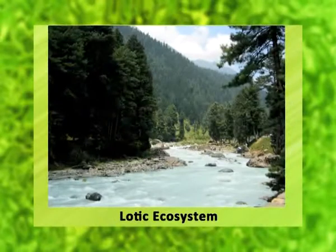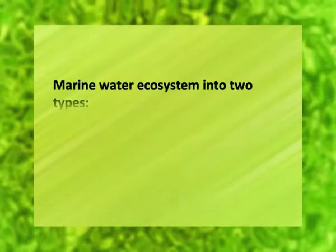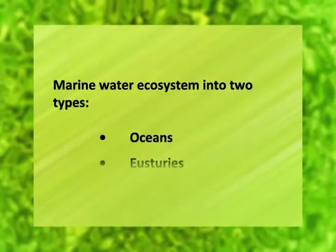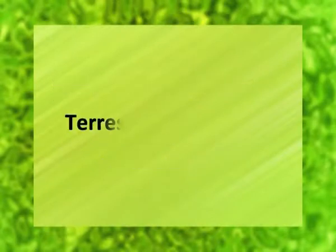And number two, lotic — moving waters — for example, streams. Similarly, marine waters are again divided into oceans, estuaries, etc.